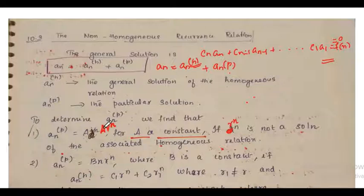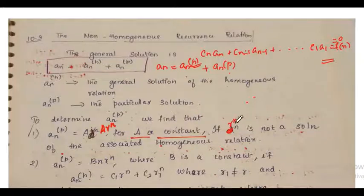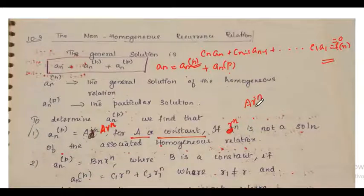To find the particular solution, there are three different cases. For Case 1, if a(n)_p is in the form A·r^n — where A is a constant — and r^n is not a solution of the associated homogeneous relation, then the particular solution is a(n)_p = A·r^n.